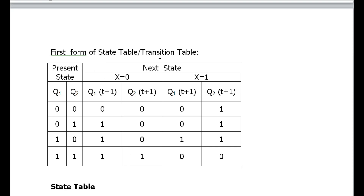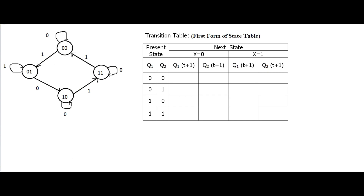This is the given problem. As mentioned, we have two bits, so we need two present state variables: Q1 and Q2. We write all possible combinations of these two present states: 00, 01, 10, 11. Now we are going to find the next state with the help of this state diagram.